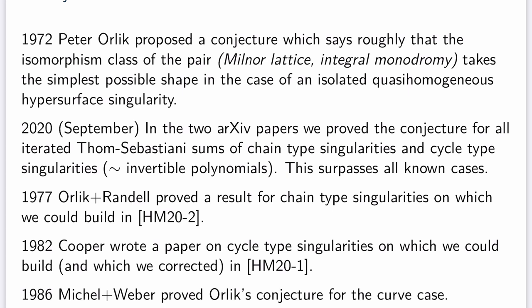This corrected work is our first paper of topological character. And finally, in 1986, Michel and Weber proved Orlik's conjecture in the case of two variables, the curve case.